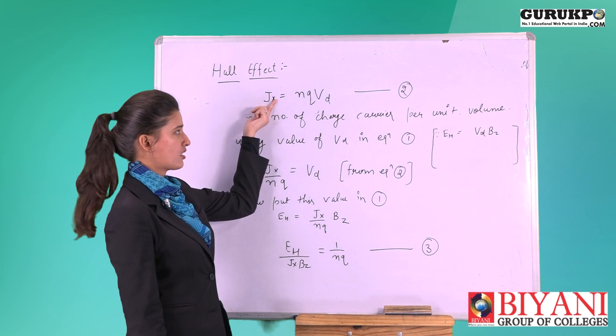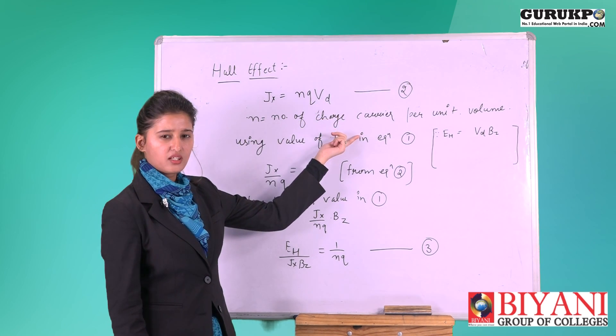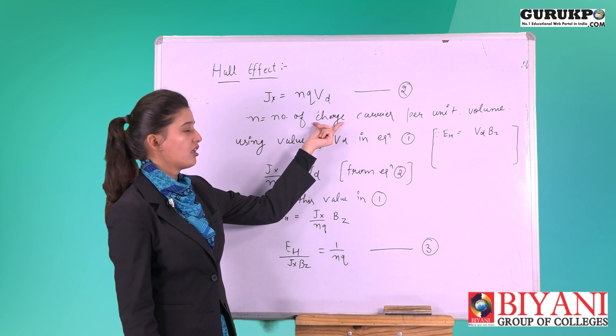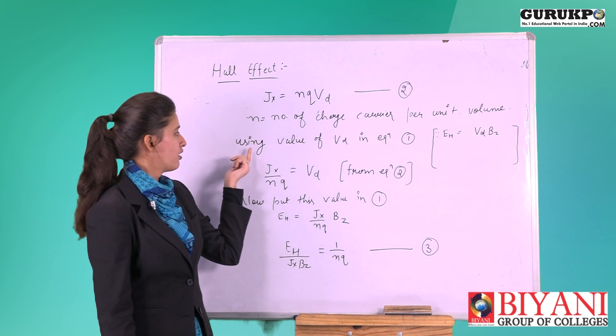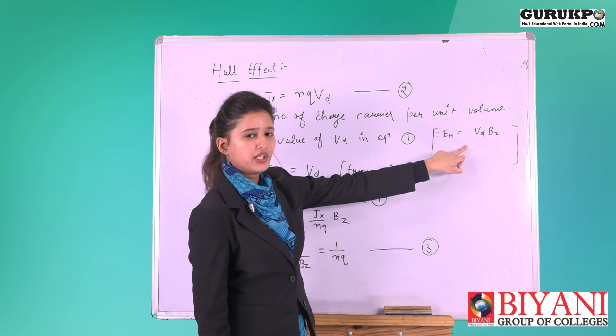For equation 2, current density j_x equal to n q V_d. N equals number of charge carriers per unit volume, it can be electrons or holes. Using value of V_d in equation 1, what was our equation 1 is E_h equal to V_d B_z.